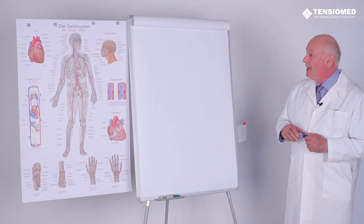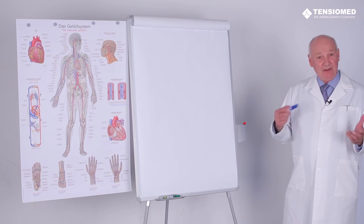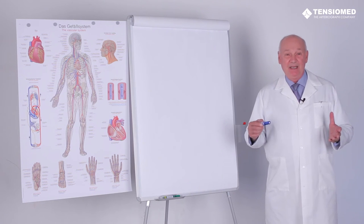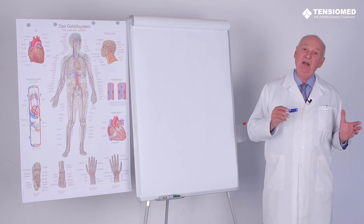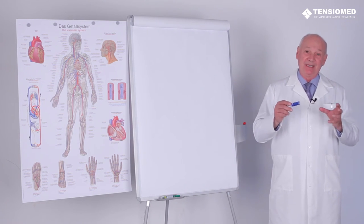Thus, the aorta is a typical artery of the elastic type, while other arteries are more of the muscular type, containing a muscular layer. So the aorta and aortic pulse velocity are in a strong relation to aortic stiffness.